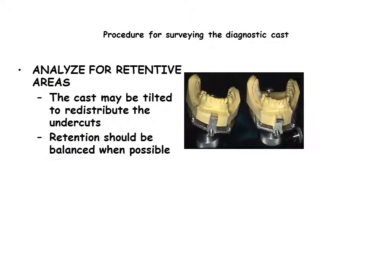When areas of potential retention have been identified and measured, the cast may be tipped laterally to relocate the desired undercut if necessary. Retention is bilaterally opposed and equal in magnitude when possible. It is important to recall that undercut cannot be established by simply tipping the cast.